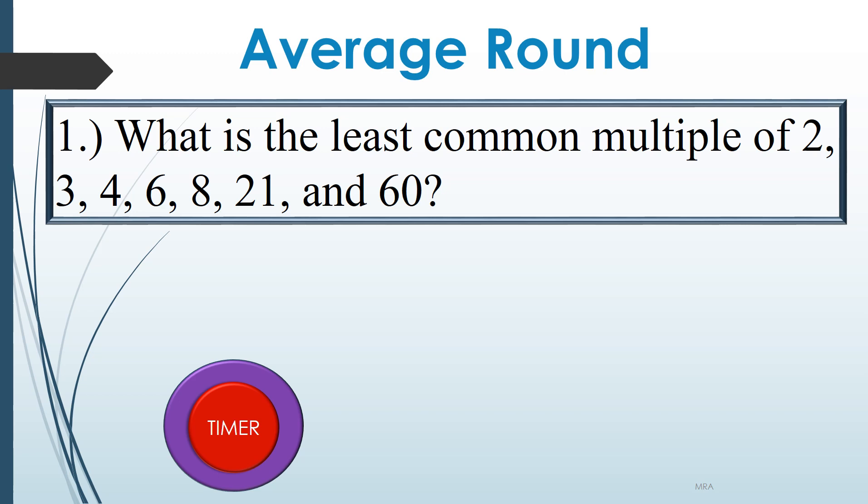What is the least common multiple of 2, 3, 4, 6, 8, 21, and 60? Go!